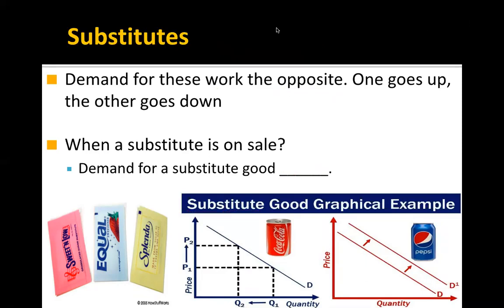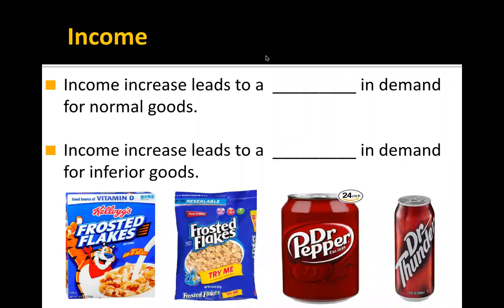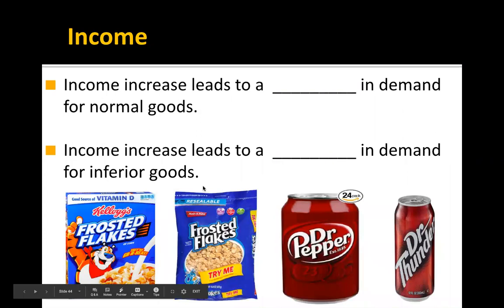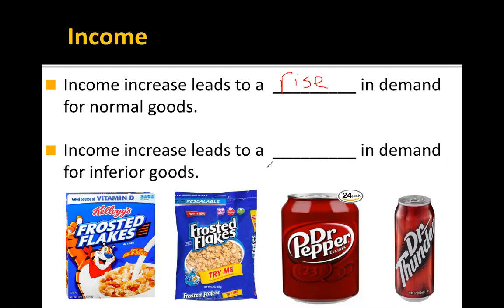What about income? When your income increases — you get a raise, a new job, or any job — an income increase leads to a rise in demand for normal goods. Another way to think about normal goods is name brand. If you make more money, you demand more name-brand goods.